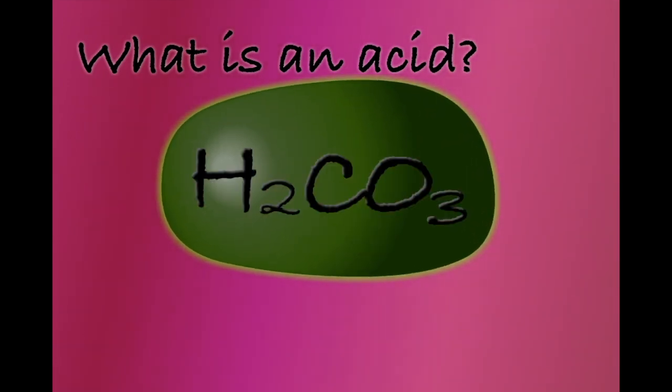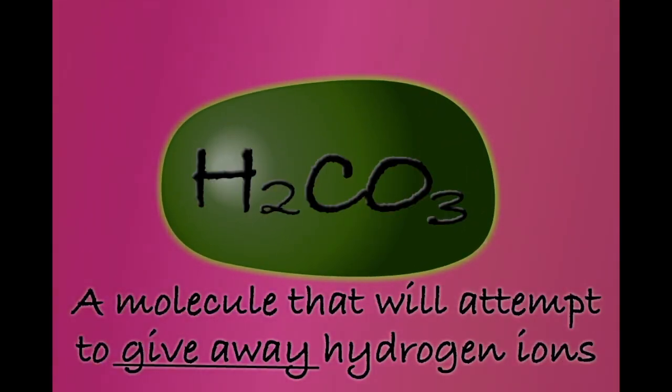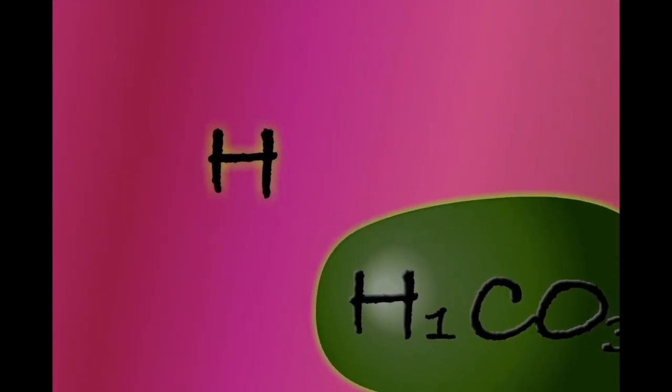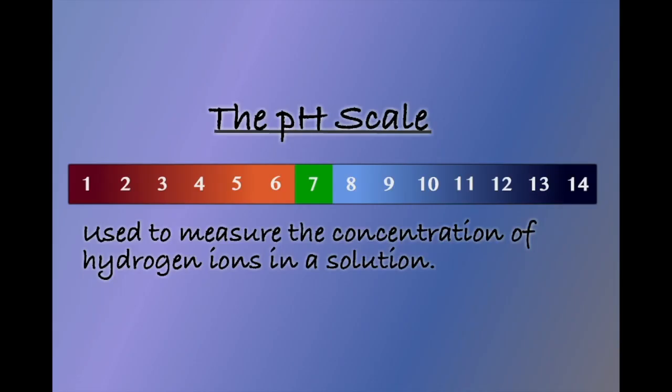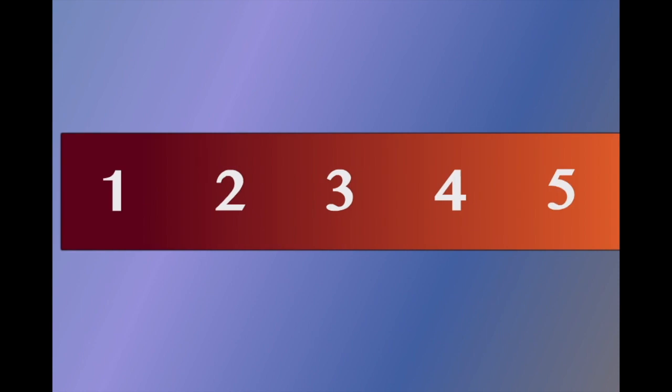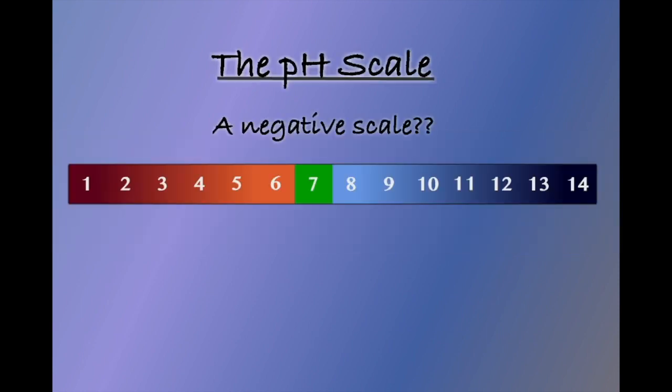For the purposes of this video, we will think of an acid as a molecule that will attempt to give away hydrogen ions to another molecule. Having more acid in our blood essentially means there are more hydrogen ions available to be donated. We measure the concentration of hydrogen ions in a solution using the pH scale.